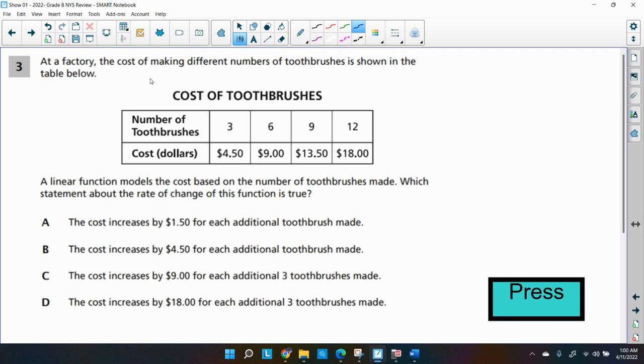At a factory, the cost of making different numbers of toothbrushes is shown in the table below. So the cost of toothbrushes, the numbers of toothbrushes on the top, and in the second row, the cost in dollars. A linear function models the cost based on the number of toothbrushes made. So here we have a function, a linear function at that.